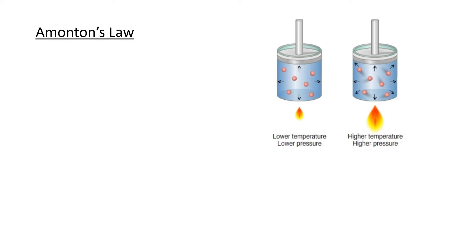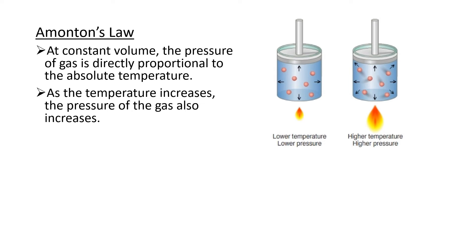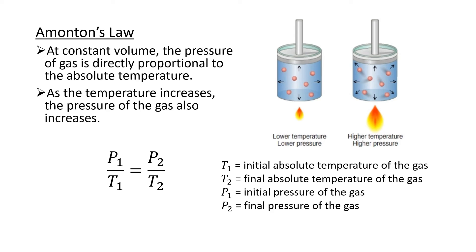Now we have Amonton's Law, sometimes also known as Gay-Lussac's Law. This gas law states that at constant volume, the pressure of the gas is directly proportional to the absolute temperature, meaning as the temperature increases, the pressure also increases. The relationship is expressed as P1/T1 = P2/T2, where T1 and T2 are initial and final absolute temperatures, and P1 and P2 are initial and final pressures.